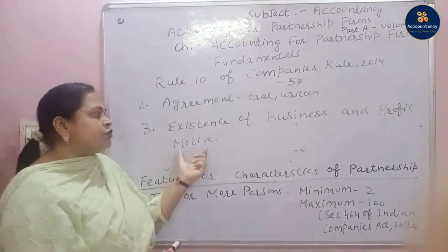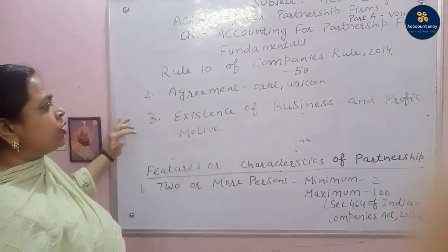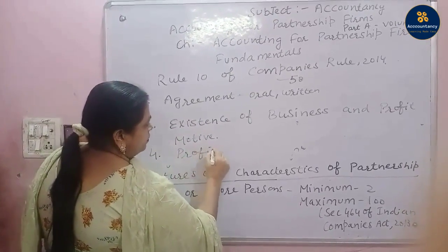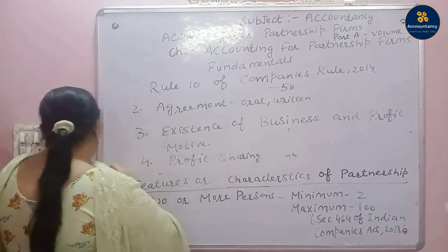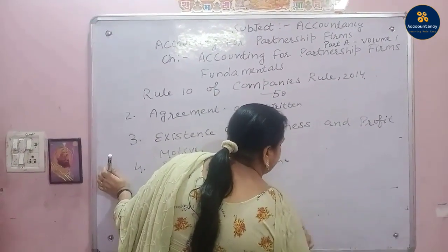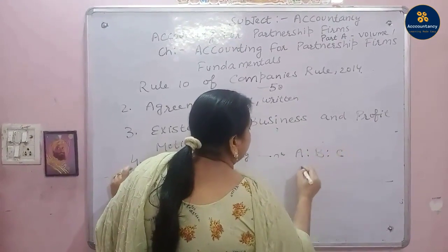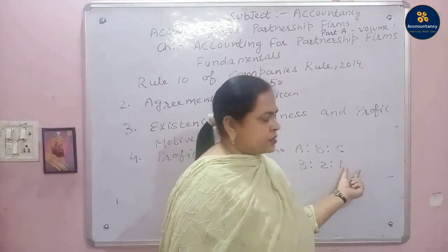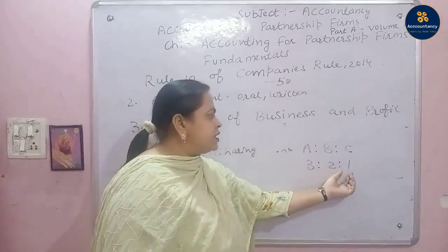Profit motive means all the partners should join together to earn maximum profit. The fourth feature is profit sharing — when they have earned profit, it should be distributed among themselves. For example, there are three partners A, B, and C distributing profit in the ratio of 3:2:1. The total is 6, so A will get 3/6, B will get 2/6, and C will get 1/6 of the total profit.